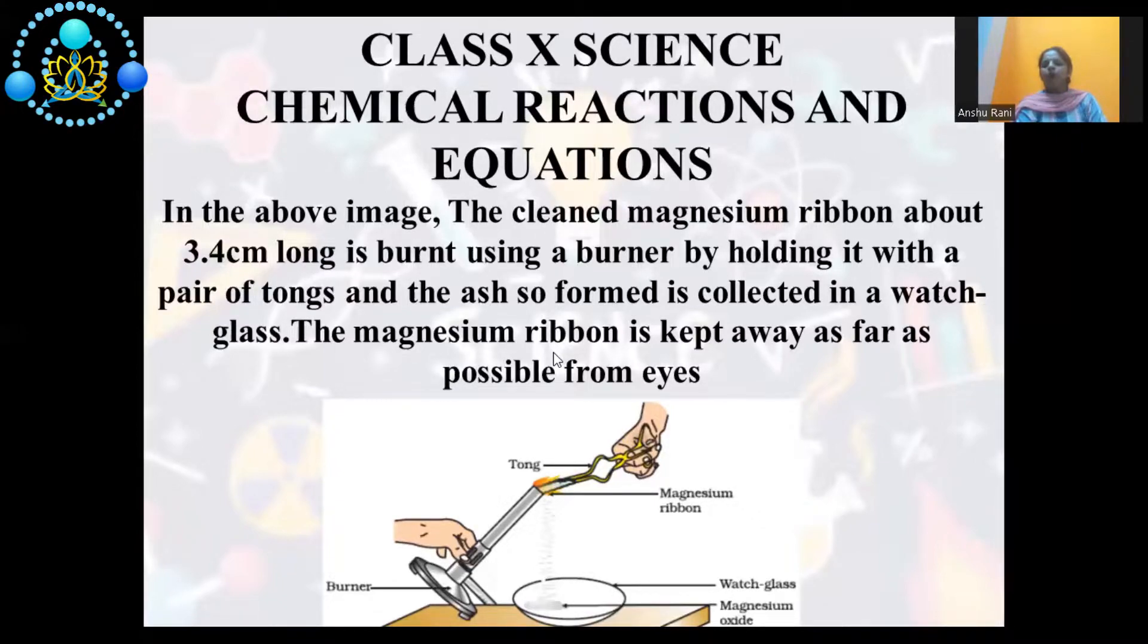This is a white powder, white ash, which can be collected. Its nature will be basic. Magnesium ribbon burns with dazzling white light to form white ash, that is magnesium oxide. Now, let's discuss about the answers of these questions.